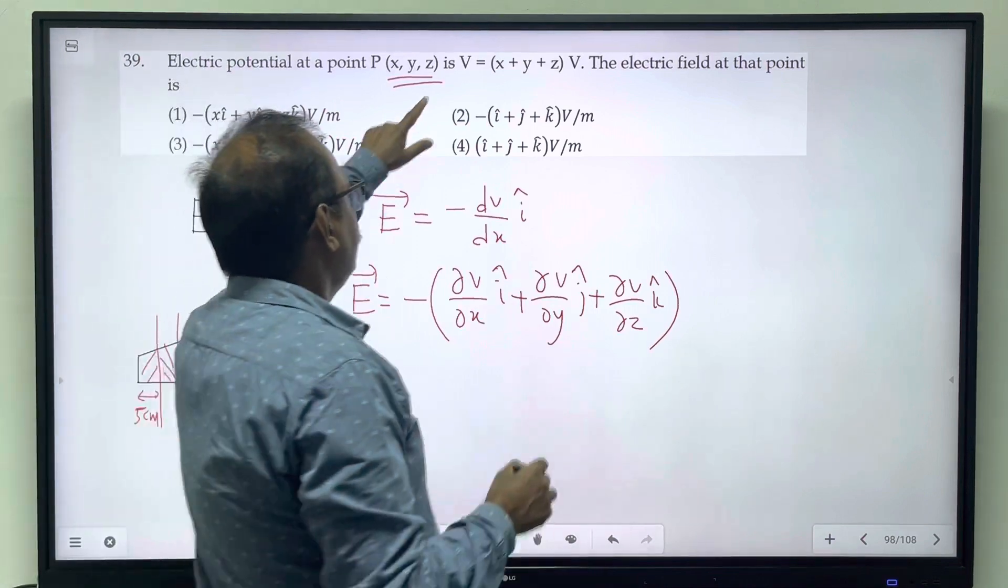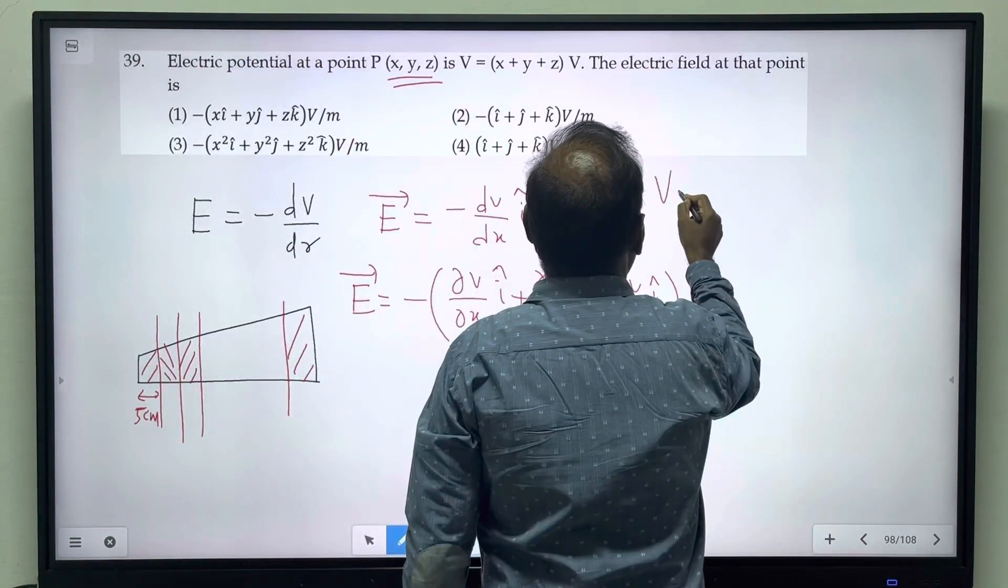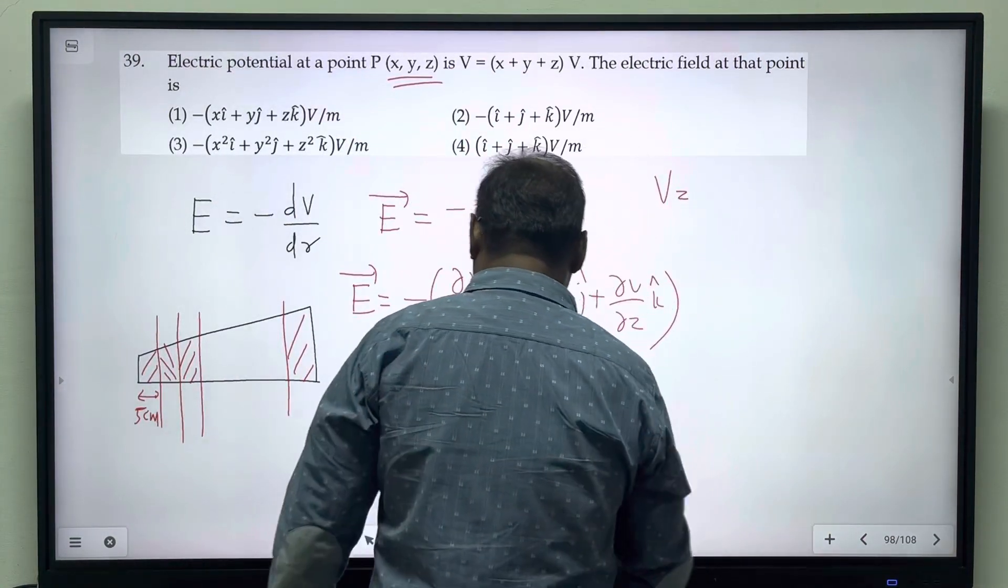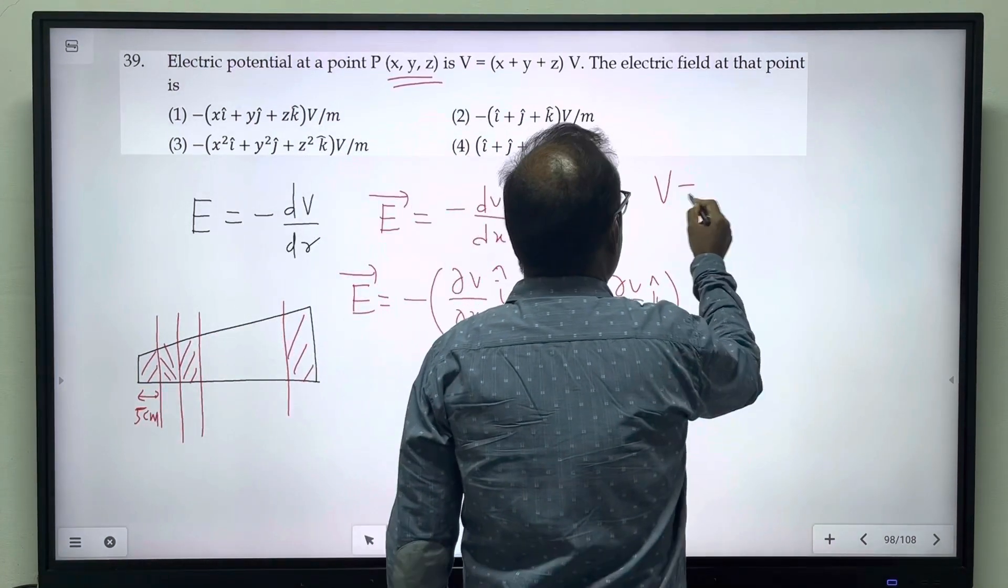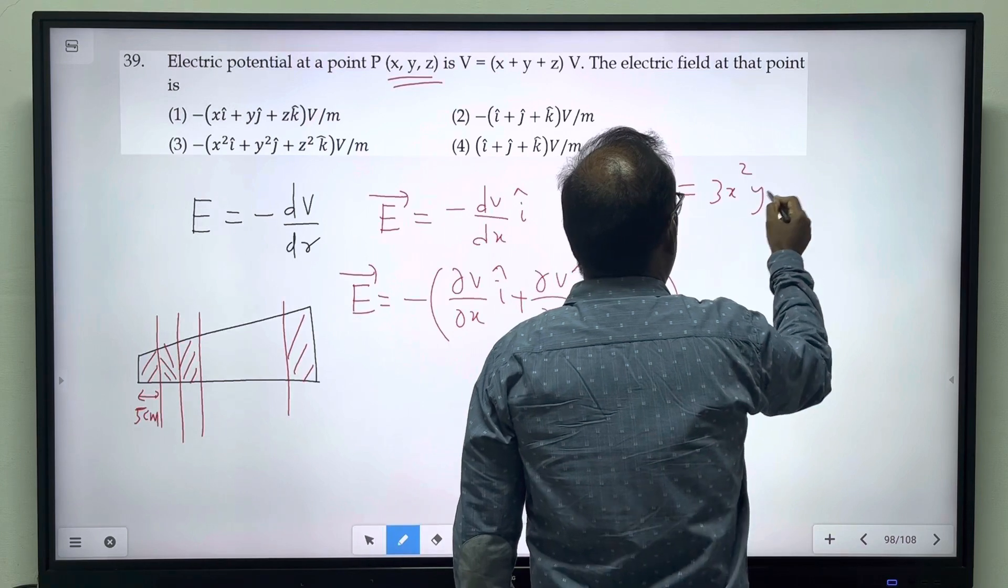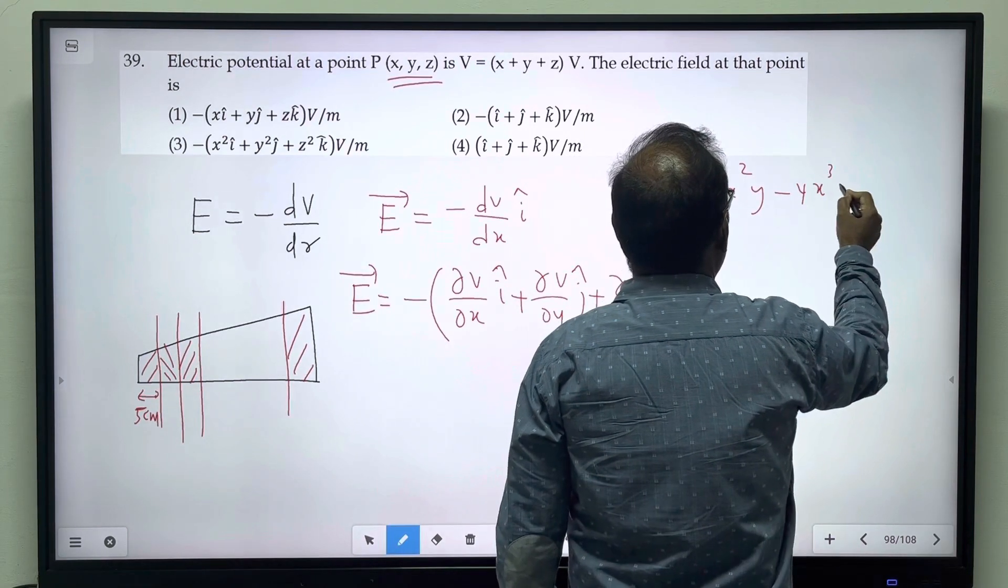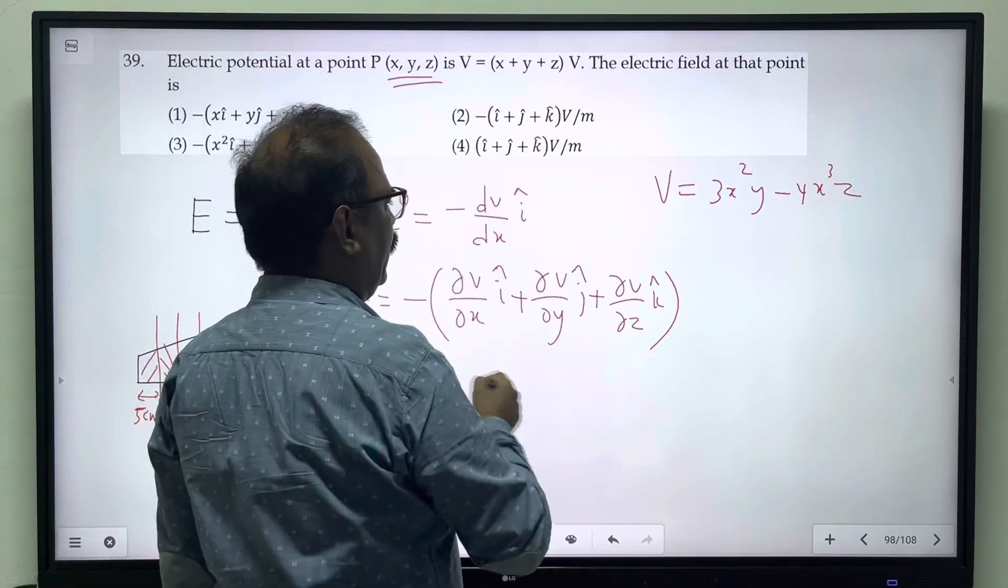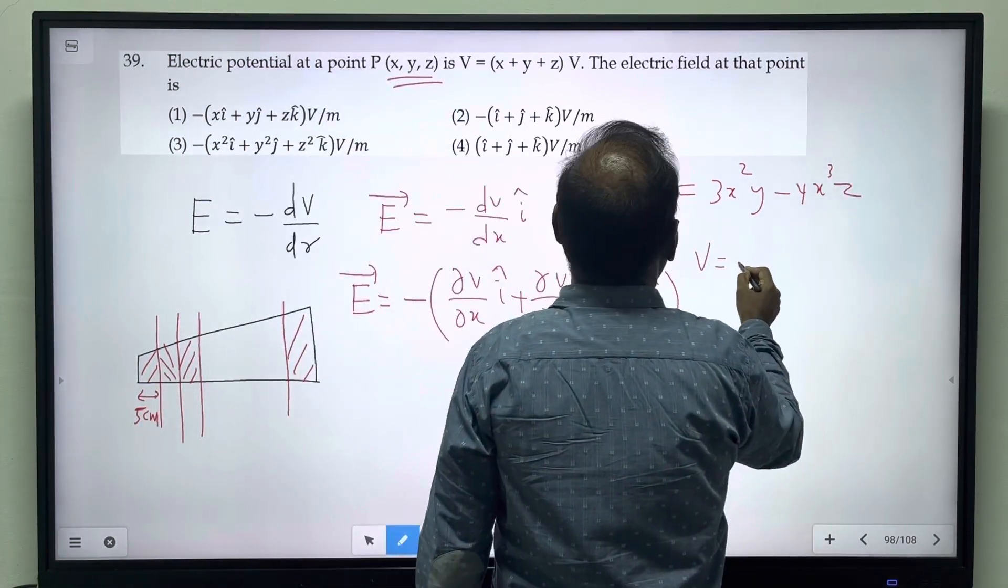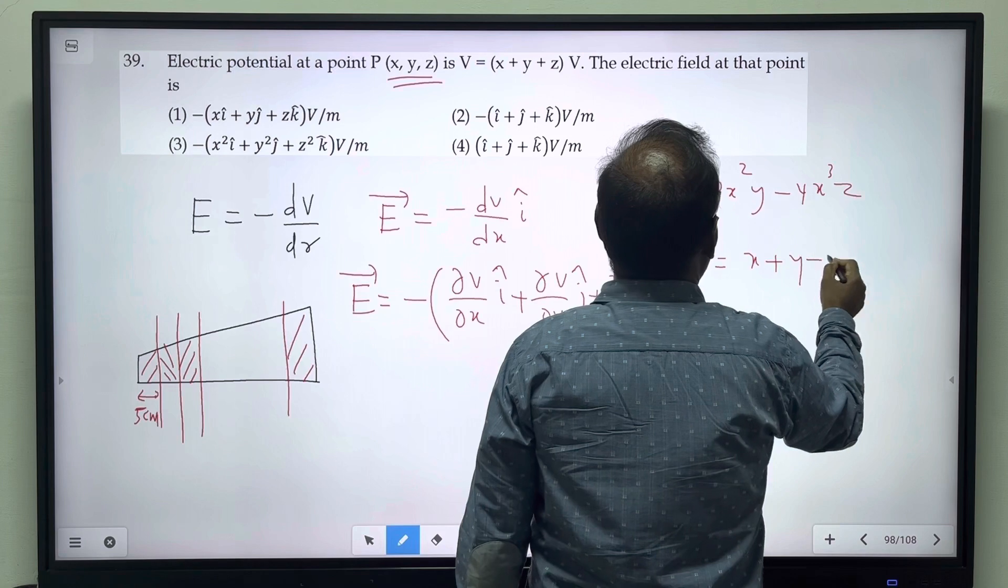This is very simple. In previous years, we've seen more complicated expressions like 3x²y minus 4x³z. But in this case, it's very simple. Here, V equals x plus y plus z.